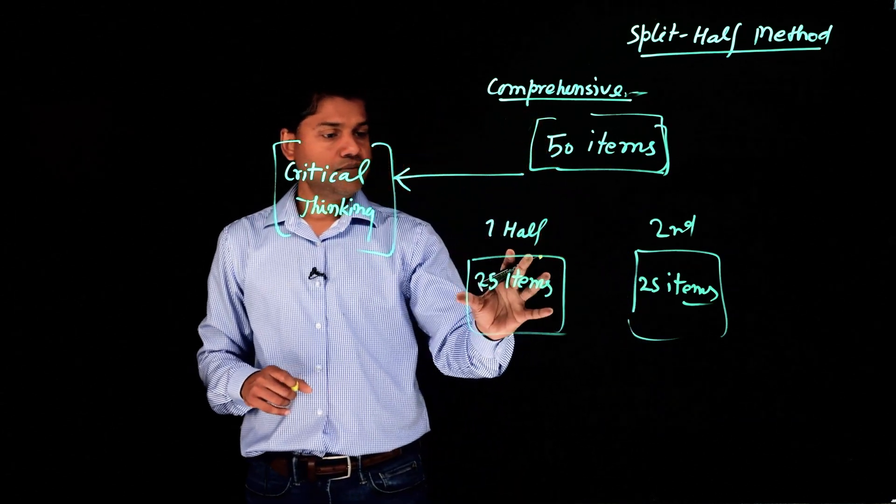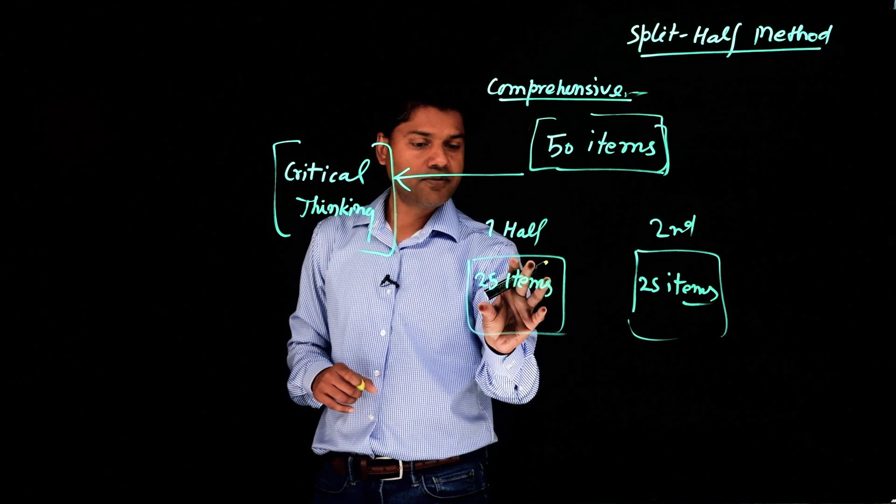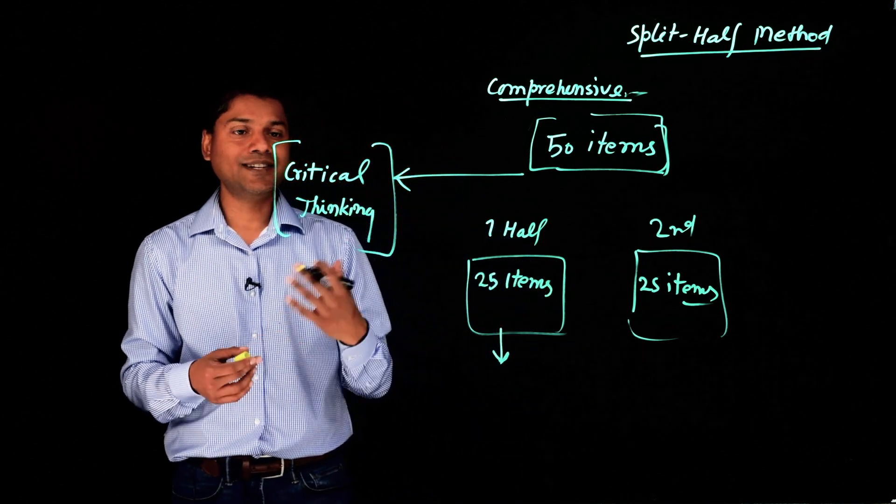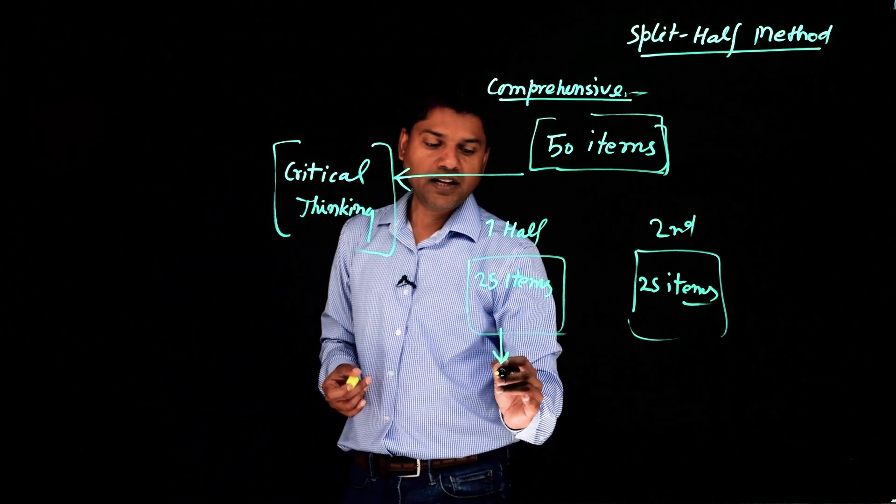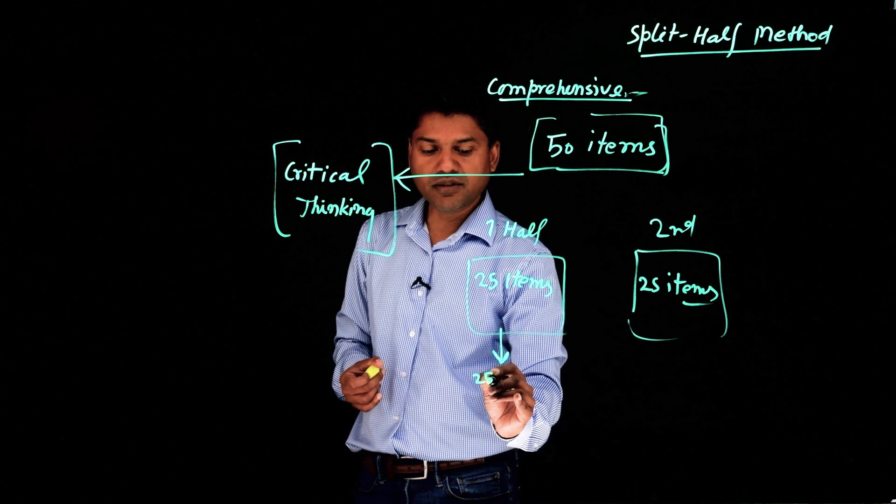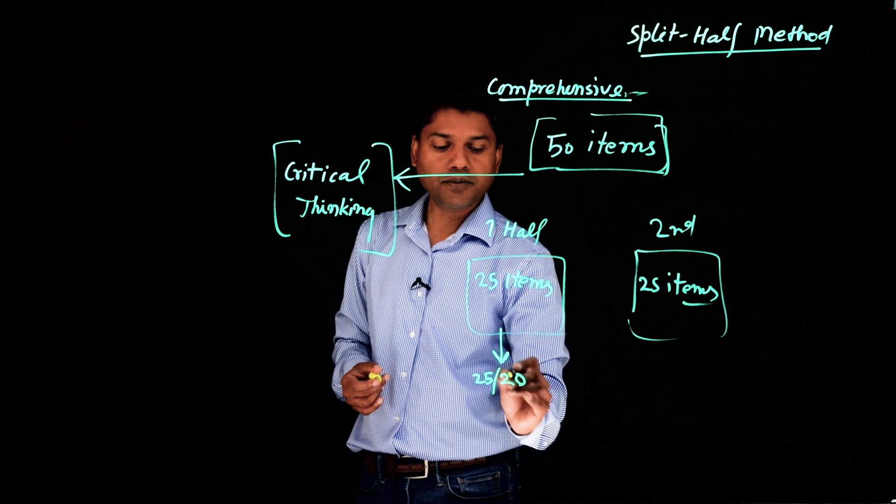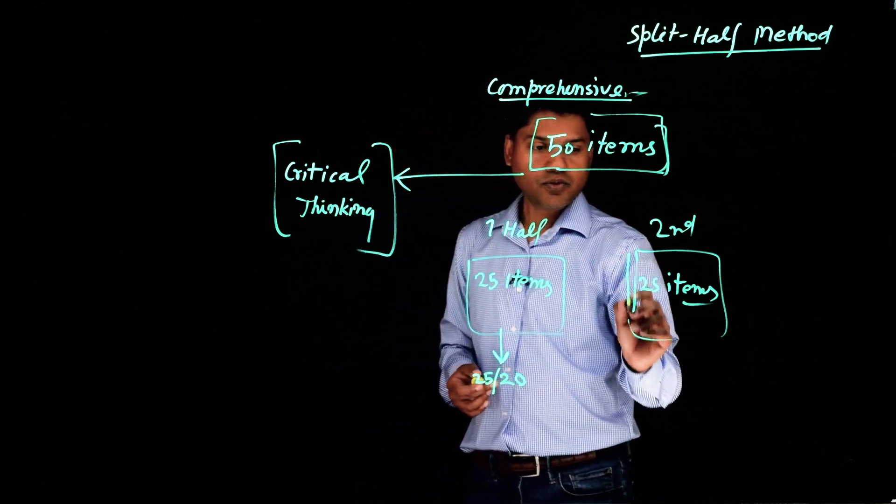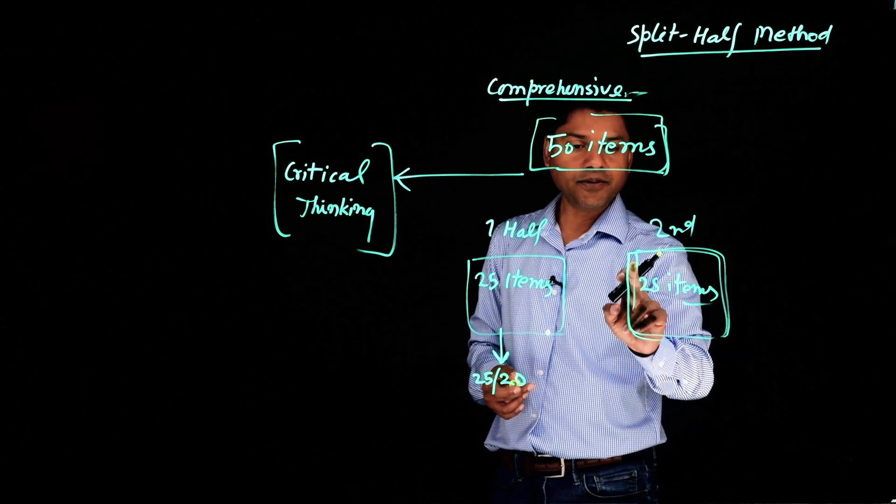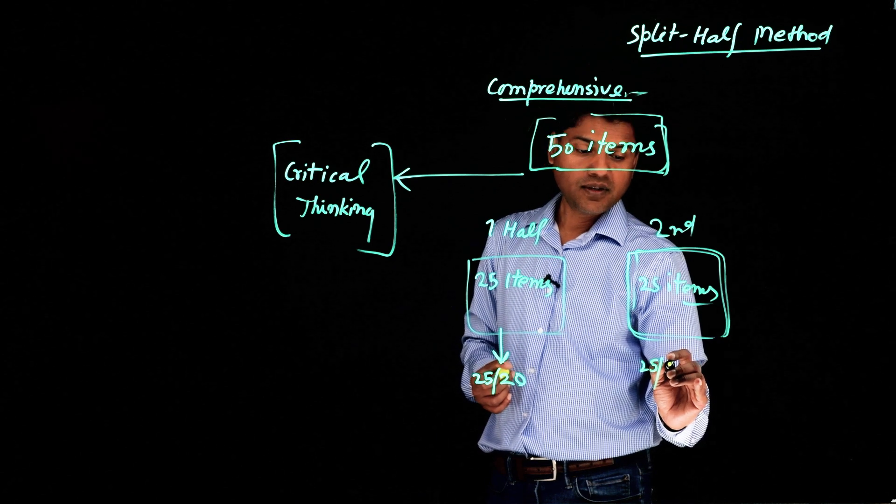So what I do, I give these split halves—the first 25 items—to, let's say, undergraduate students to measure their critical thinking ability. So they score out of 25, which is maximum. They score, let's say, a student scores 20. The other 25, the second half of the test, the other 25 items—let's say the same student scores out of 25, 21.